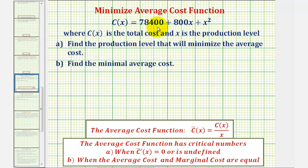C of x equals 78,400 plus 800x plus x squared, where C of x is the total cost and x is the production level.